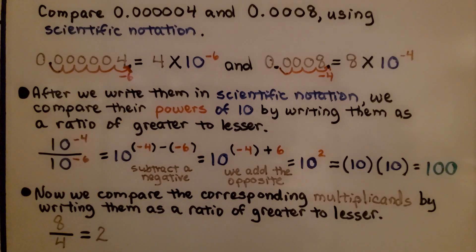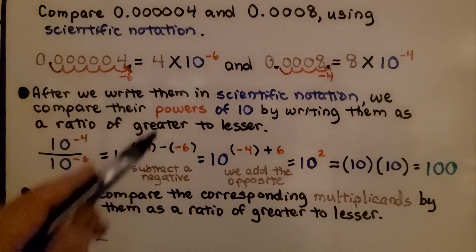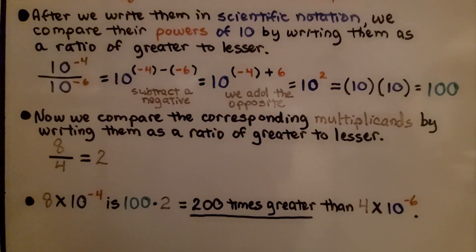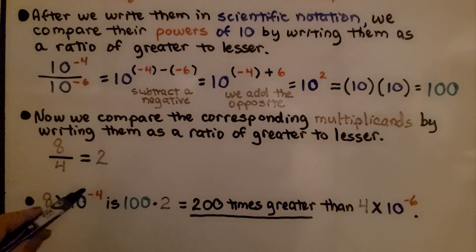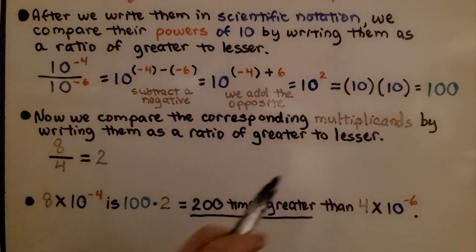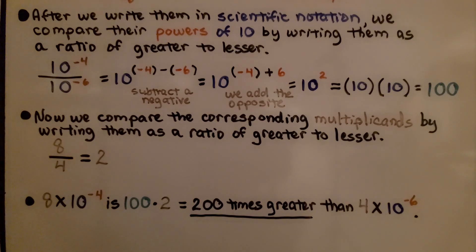Now we compare the corresponding multiplicands by writing them as a ratio of greater to lesser. We have 4 and 8 — 8 is greater, so we put 8 over 4, which is equal to 2. That means 8 times 10 raised to the negative 4th power is 100 times 2, which is equal to 200 times greater than 4 times 10 to the negative 6th power.